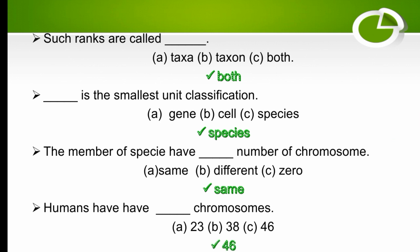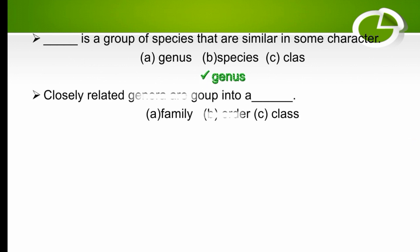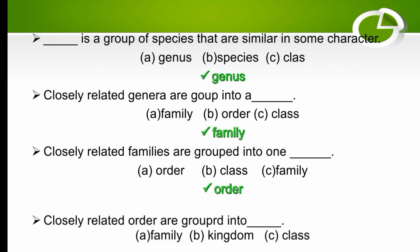A genus is a group of species that are similar in some character — the right option is genus. Closely related genera are grouped into a family. Closely related families are grouped into one order — the right option is order.